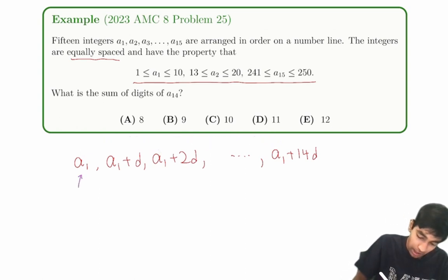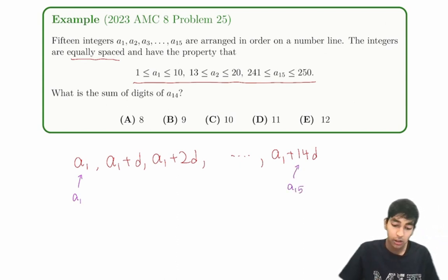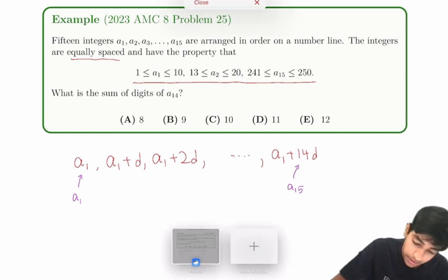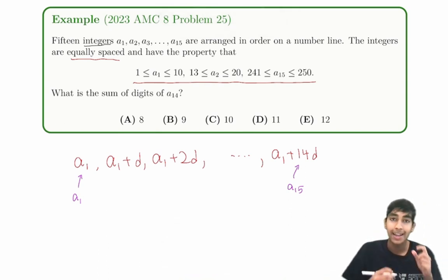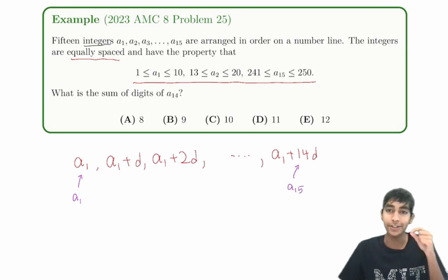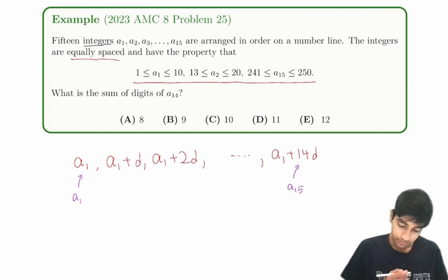We've already kind of encoded this first condition. Another condition that might be neglected is integers. This is not just something to brush off. This is super important. Integers, integers, integers. That changes the whole thing, because now it's kind of like a Diophantine equation, an equation with only integer solutions.